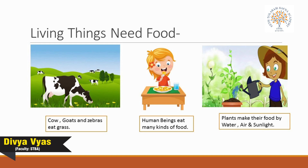Plants also feed and get rid of waste materials. All green plants make their own food in the presence of air, water, and sunlight. The green leaves are like a factory — they make food for the plant.